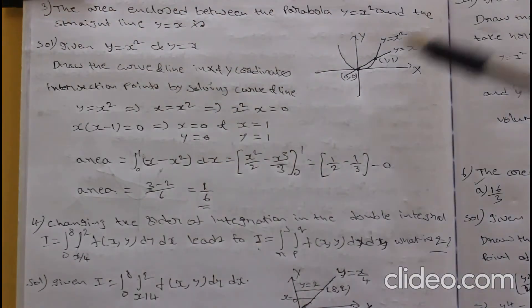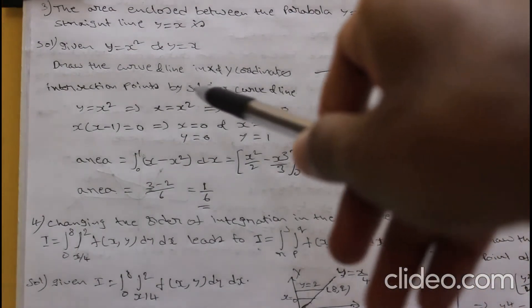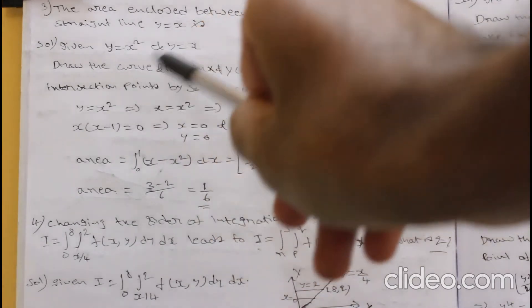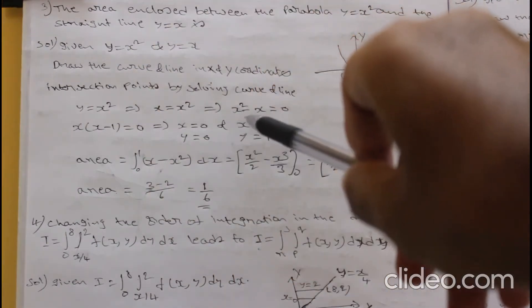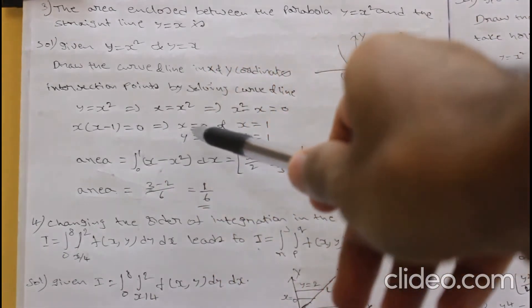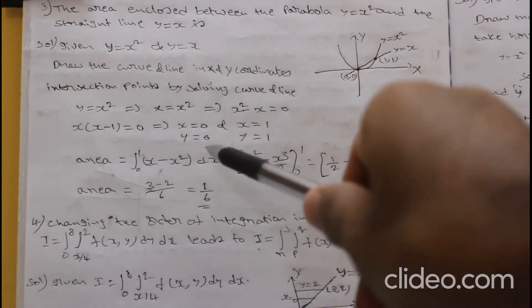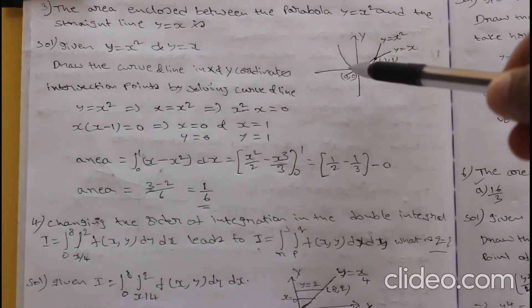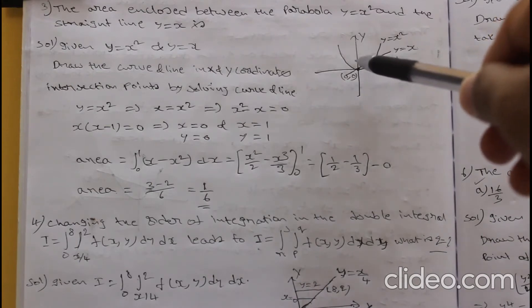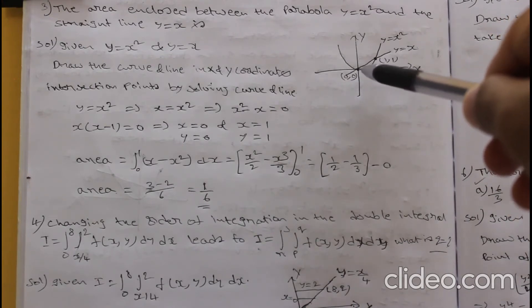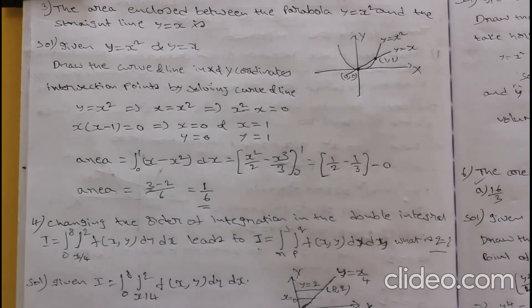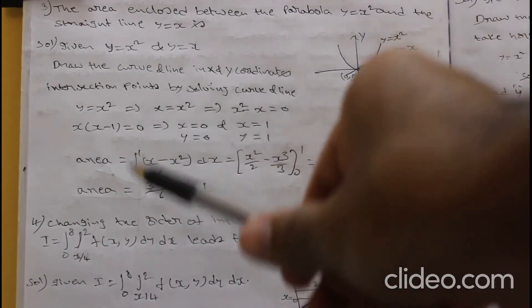To draw the line, first find the intersection points using y = x² and y = x. Substituting: x² - x = 0 → x(x-1) = 0 → x = 0 and x = 1. At x = 0, y = 0; at x = 1, y = 1. So the line passes through (0, 0) and (1, 1).